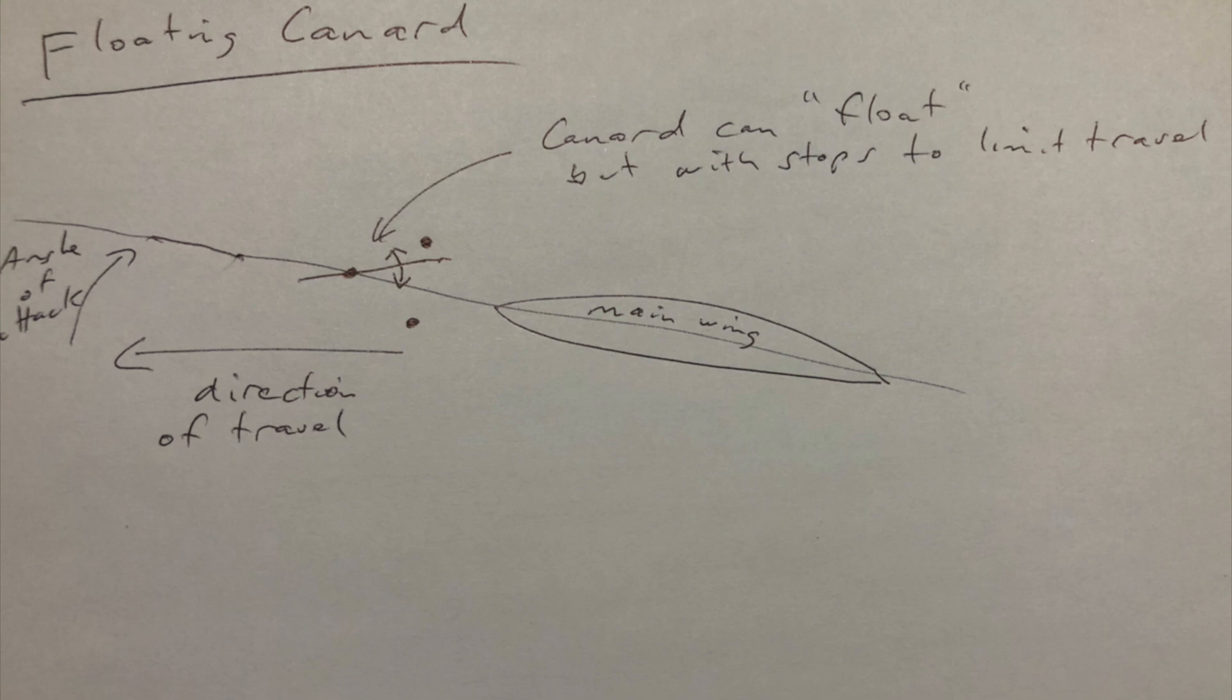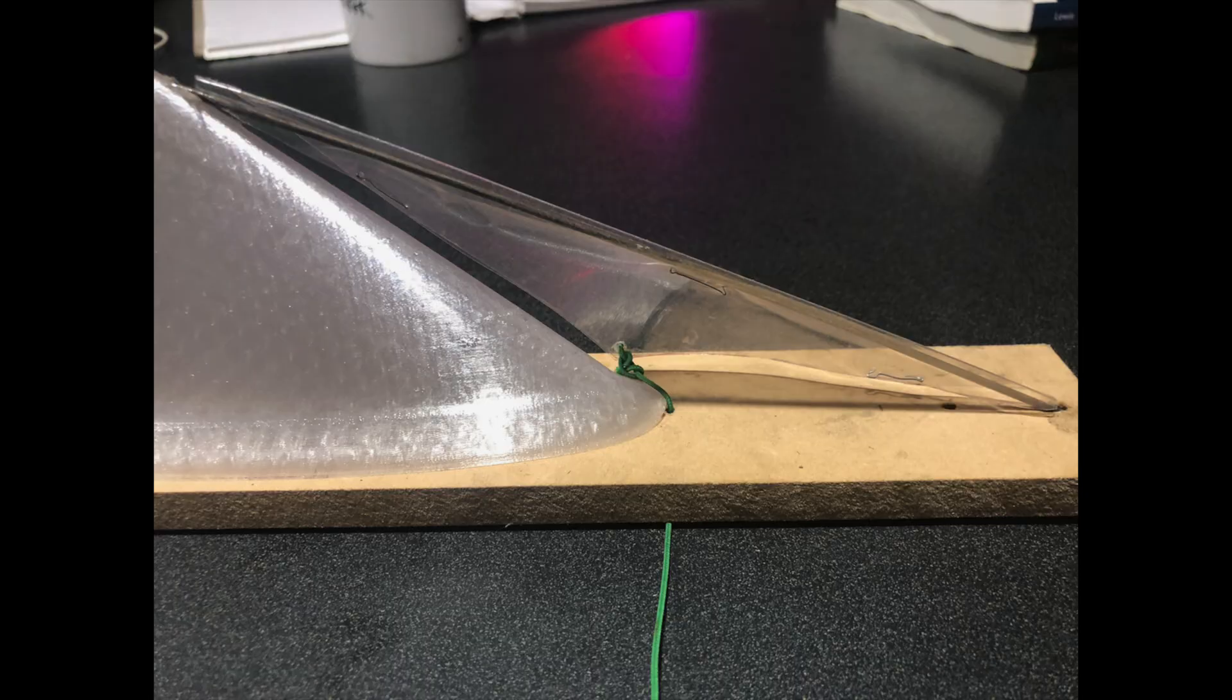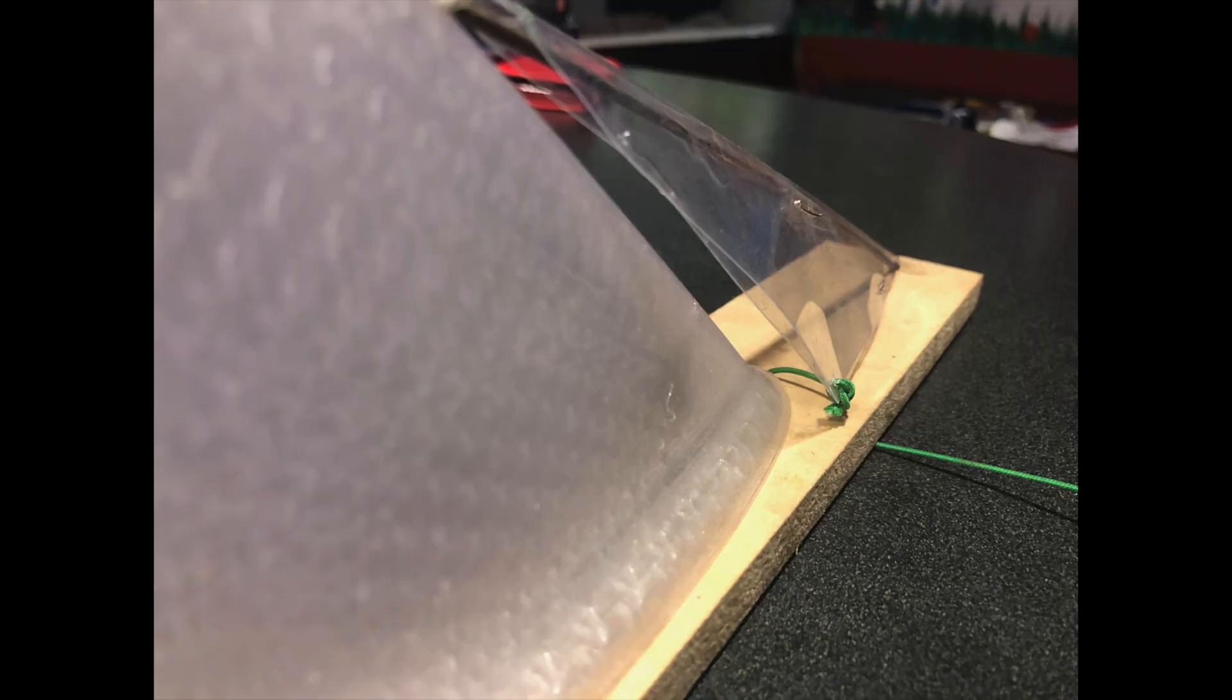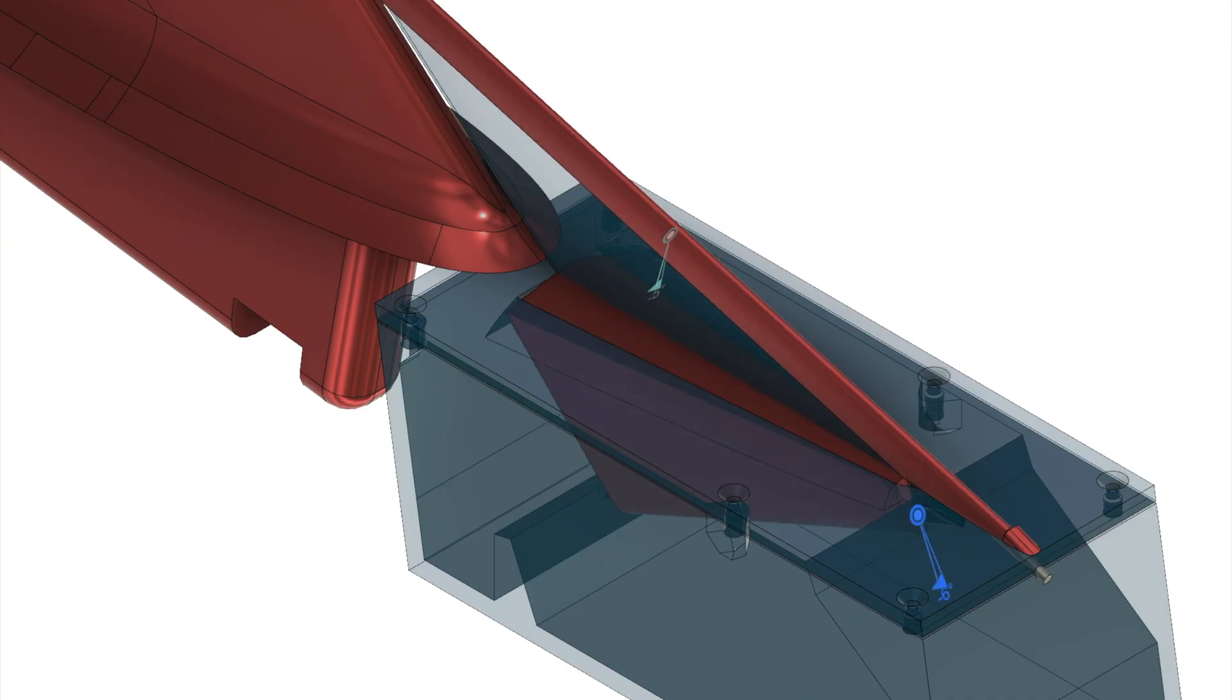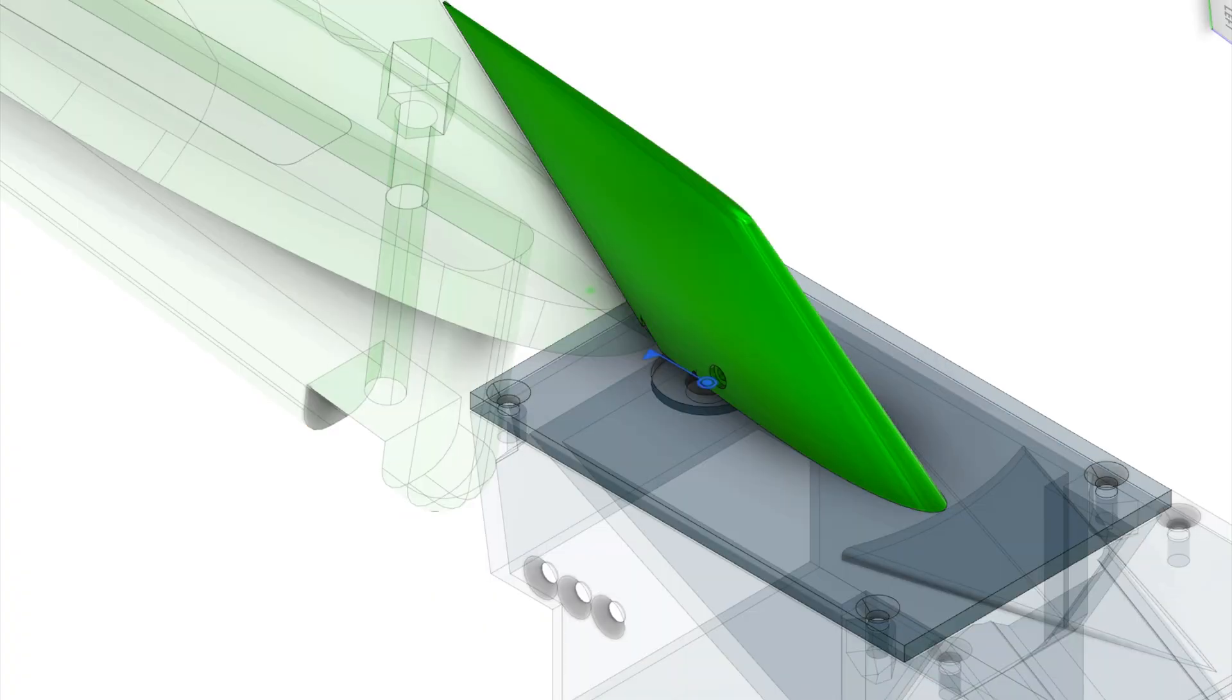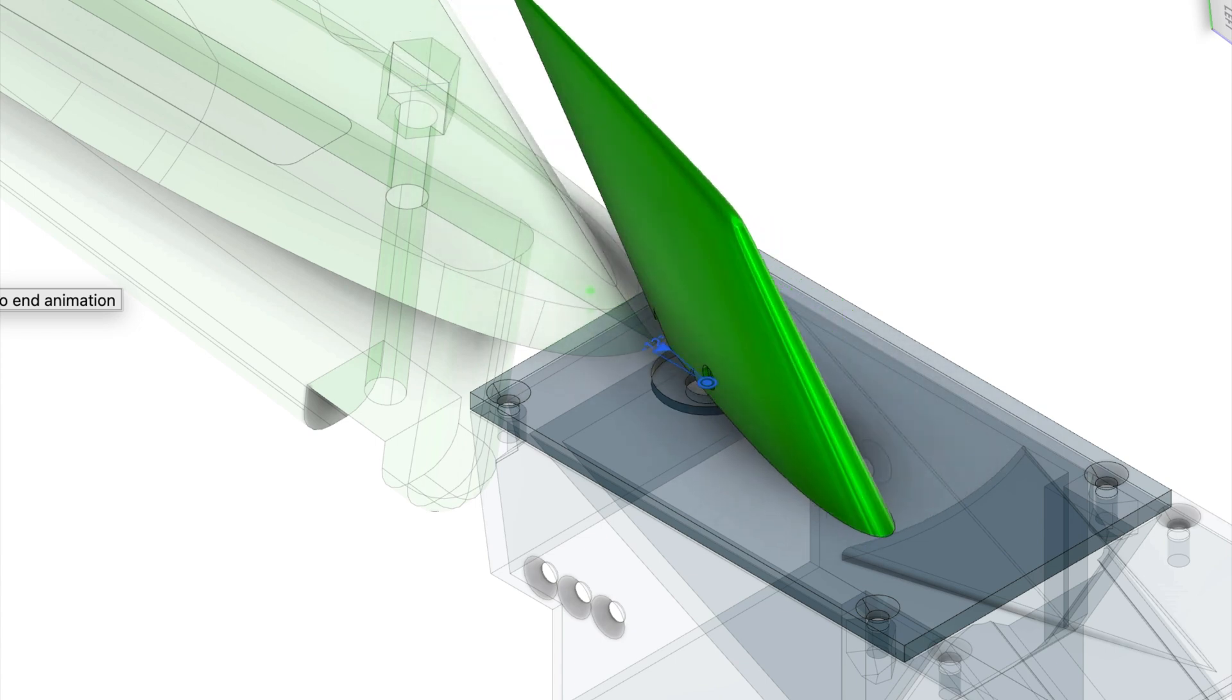Decrepit said the ones he made were free floating canards which means they follow the flow. Whilst he was trying to explain this to me he said it's sort of like a foresail on a yacht so the first prototype I came up with was based around that idea. I also came up with another design closer to what Decrepit had done.